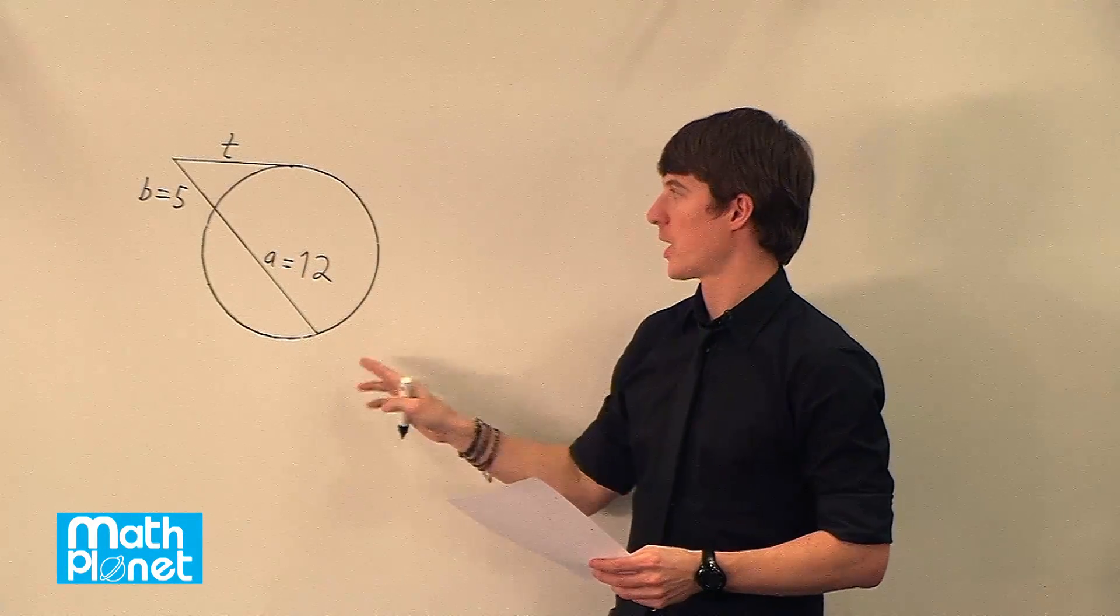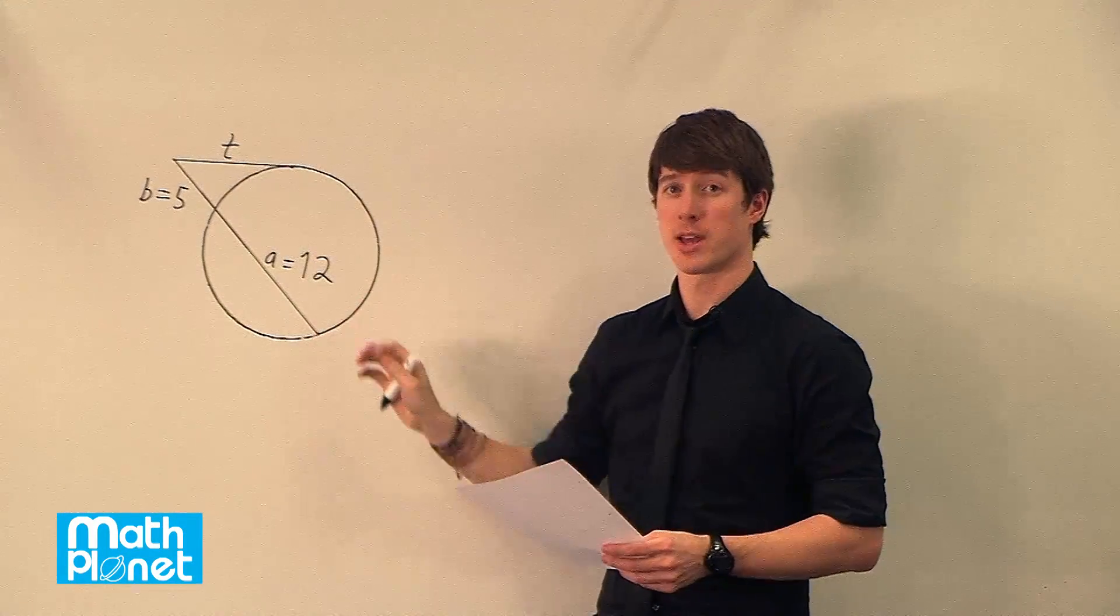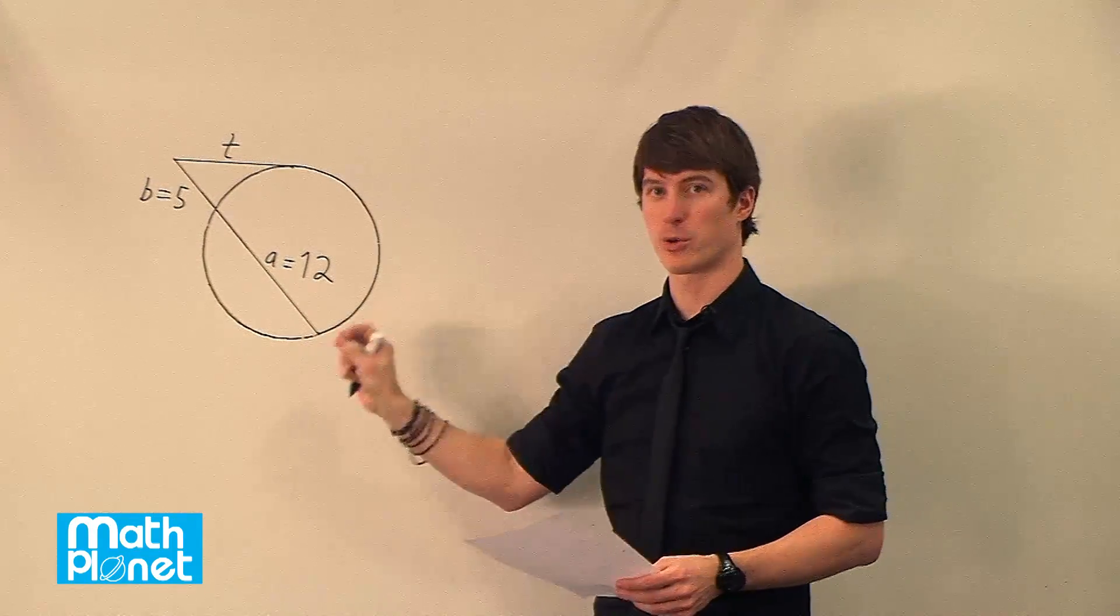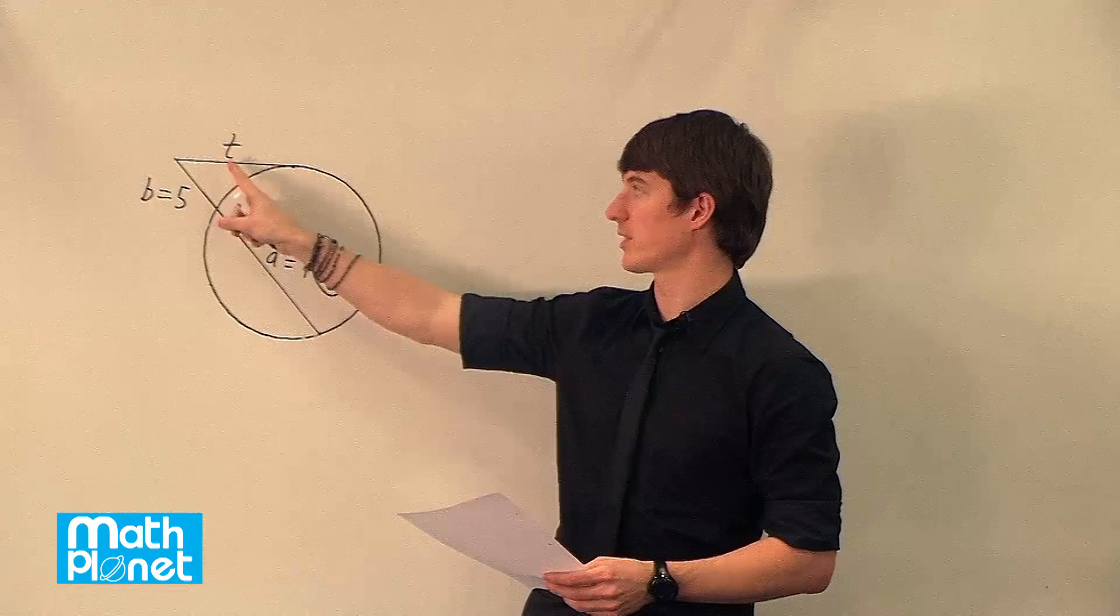Here we have this perfect circle and we have some specifically drawn lines here. And we know from some advanced knowledge about circles that there's a particular formula that we can use to find this length t.